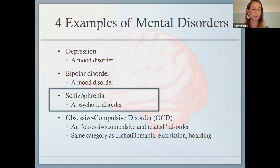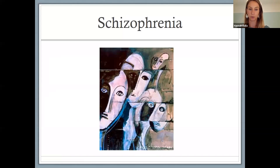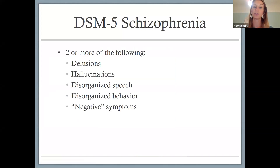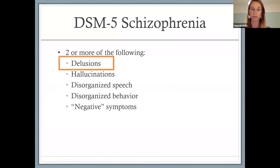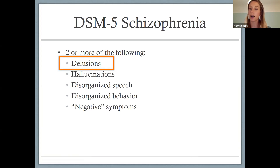Those are the two mood disorders we'll cover. We'll next move on to a different type of disorder — schizophrenia, which is a psychotic disorder. Schizophrenia includes two or more of the following five symptoms. The presentation can vary somewhat since you only need two of these five. Delusions are fixed beliefs about something that are not based in reality. Classic examples include believing the CIA is out to get you, believing you're God, believing people can read your mind, or believing a chip is implanted in your brain controlling your actions.